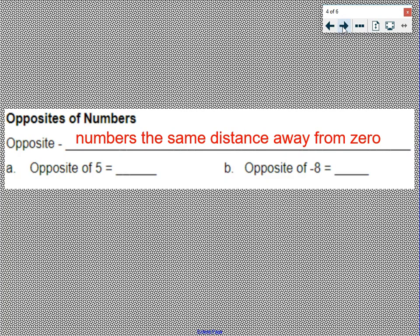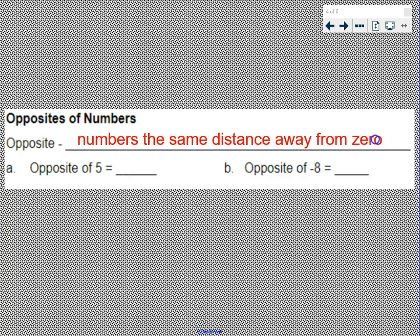Next piece: opposites of numbers. Numbers the same distance away from 0. So if we think about a number line, 0's in the middle. 1 is on this side, negative 1 is on the other side. 1 and negative 1 are opposites because they're both 1 unit away from 0. So it's really just the positive-negative. So the opposite of positive 5 is negative 5, and the opposite of negative 8 would be positive 8.